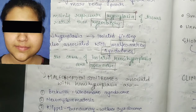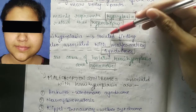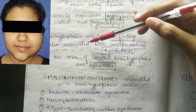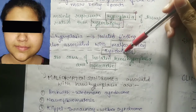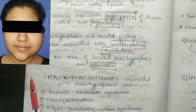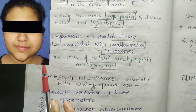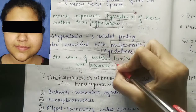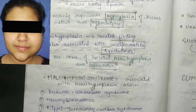Hemi hyperplasia can be an isolated finding, or it can also be associated with malformation syndromes. All cases of isolated hemi hyperplasia are sporadic.